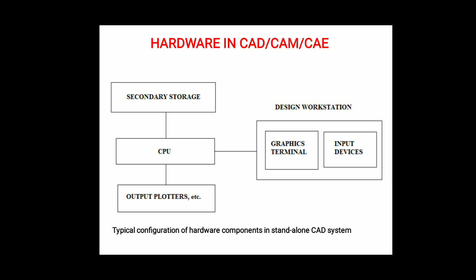Output devices include plotters and printers which generate output from the CAD system. The CPU processes the input and sends signals to output devices, which present the generated output in the form of plotters, printers, and monitors.